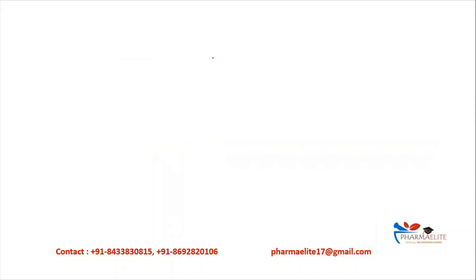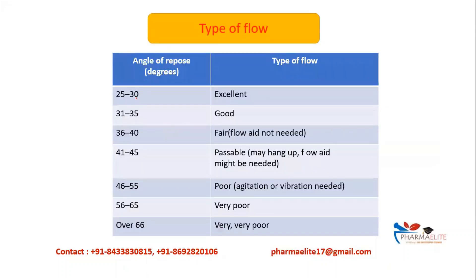Now that we have the angle of repose, we determine the type of flow. If the angle of repose is between 25 to 30 degrees, the flow is excellent. 31 to 35 degrees is good flow. 36 to 40 degrees is fair flow and no flow aid is needed. 41 to 45 degrees — flow is possible but may require a flow aid such as glidants. 46 to 55 degrees is poor flow and agitation or vibration is required. 56 to 65 is very poor flow, and over 66 is very very poor. Powders with flow above 55 are generally not used.